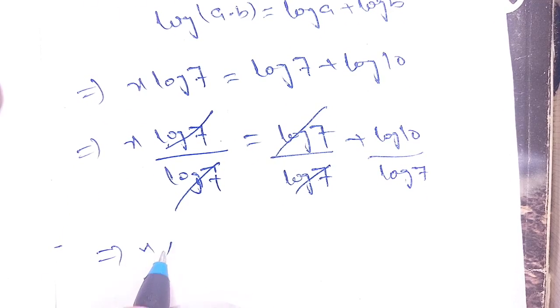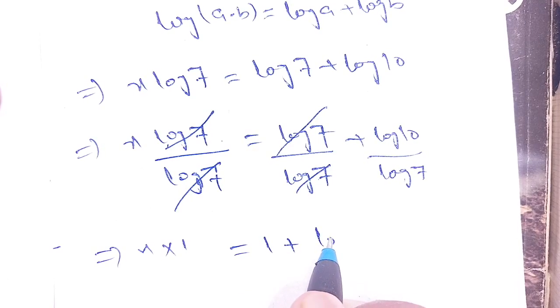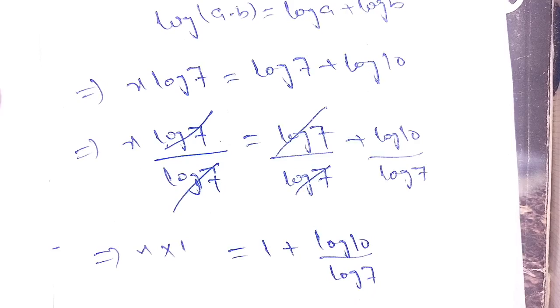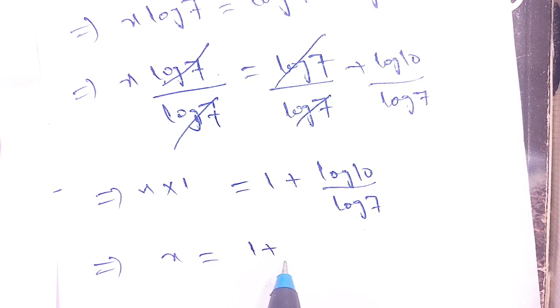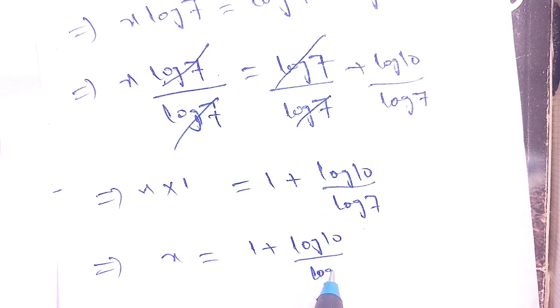Here remaining x times 1 is equal to 1 plus log(10) divided by log(7). Which implies x is equal to 1 plus log(10) divided by log(7).